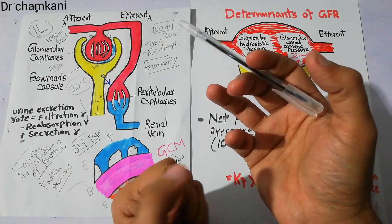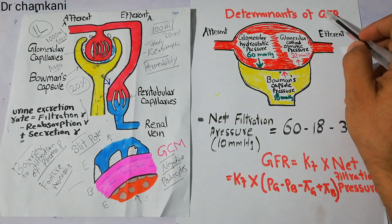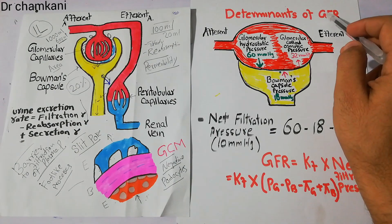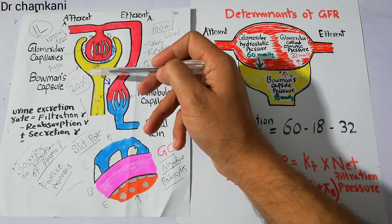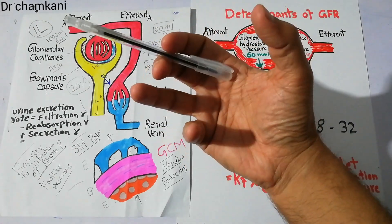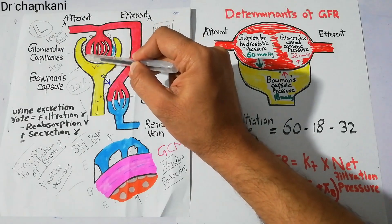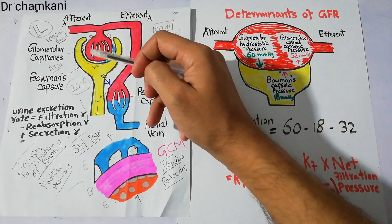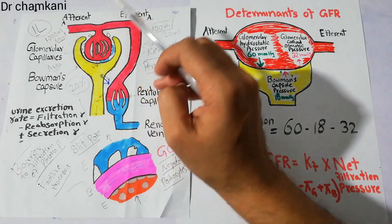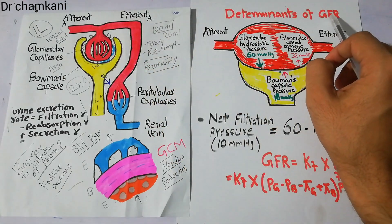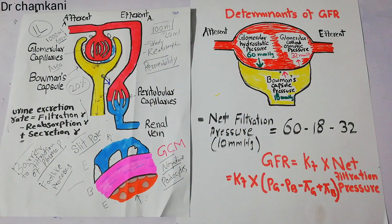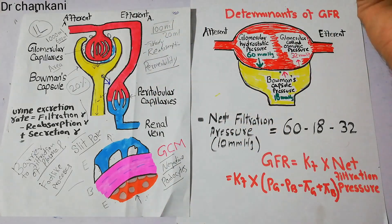GFR, the glomerular filtration rate, is the rate at which plasma is filtered. We also discussed the filtration fraction — not all plasma going through the glomerulus is filtered, but a fraction of it is filtered into the Bowman's capsule. The speed at which it is filtered is the GFR. There are many determinants of GFR, and these determinants help determine the rate or speed of filtration.